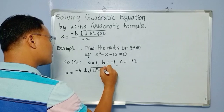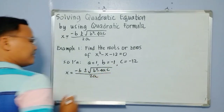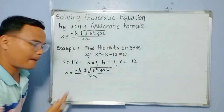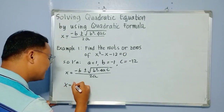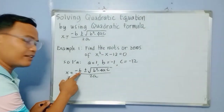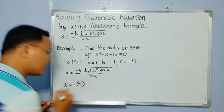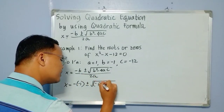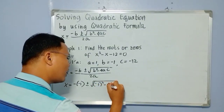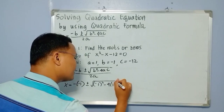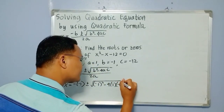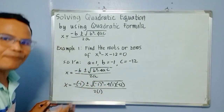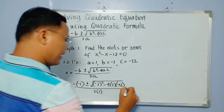Then write the formula: x equals negative b plus and minus the square root of b squared minus 4ac, all over 2a. Then substitute the values of a, b, and c. So we have x equals negative of negative 1, plus and minus the square root of negative 1 squared minus 4 times 1 times negative 12, all over 2 times 1.